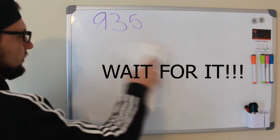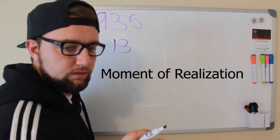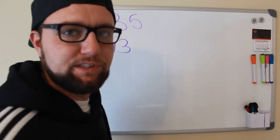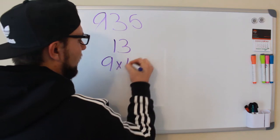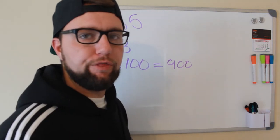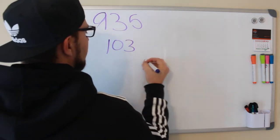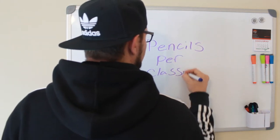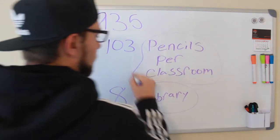Wait — so the answer to our question is we can give them evenly to 13 classrooms? 9 classrooms get 13 pencils apiece? That doesn't make any sense. Guys, I did it wrong from the start. In order to get 900, we have to do 9 times 100, which gives us 900. So it's actually 103 pencils per classroom, and then 8 pencils left over for the library. Boom, we got it.